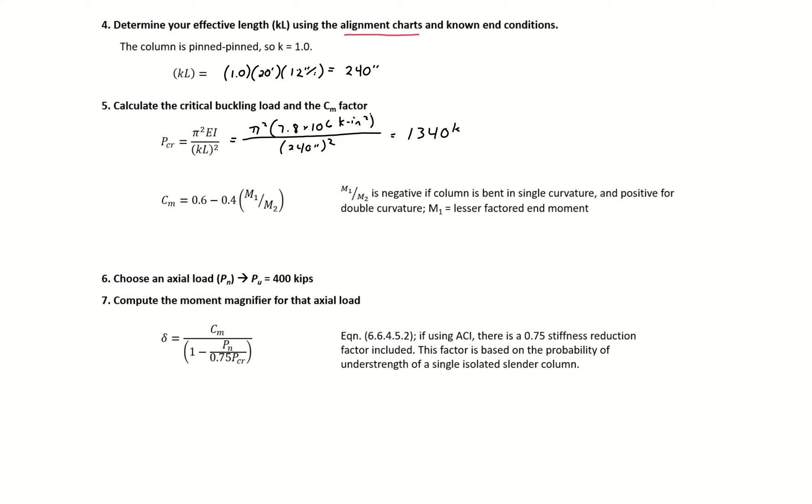We can also find our C_M factor. C_M equals 0.6 minus 0.4 times M_1 over M_2. This is the same ratio we used before, the ratio of bottom to top eccentricity. It's going to be negative because we're bent in single curvature, so negative 0.5, giving us C_M equal to 0.8.